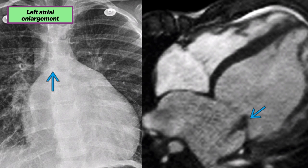The next case is left atrial enlargement. The X-ray on the left shows cardiomegaly — an enlarged cardiac silhouette. There is splaying of the carina noted by the arrow, which is consistent with left atrial dilation. Combined with normal pulmonary vascularity and mild central interstitial edema, these findings suggest left heart failure. The four-chamber SSFP MRI on the right, in the same case, shows left atrial and left ventricular dilation, along with a dephasing jet from mitral regurgitation.